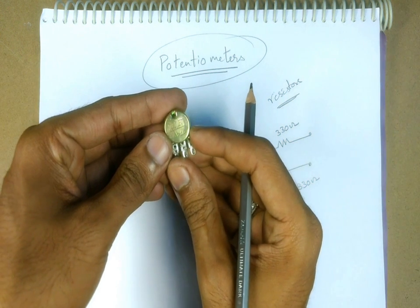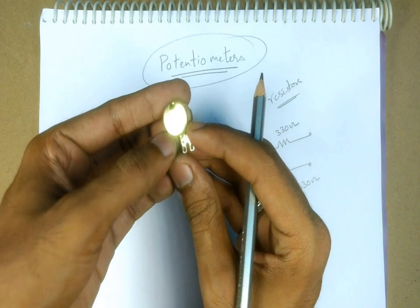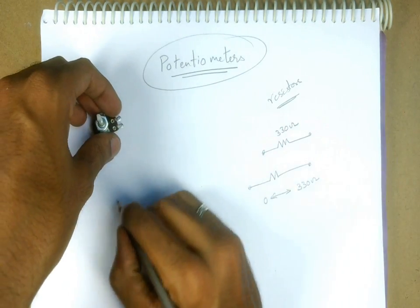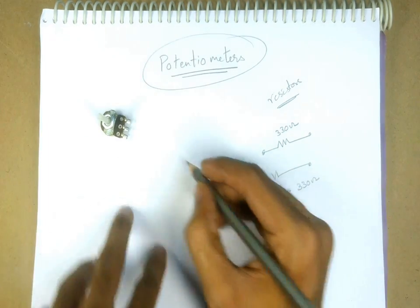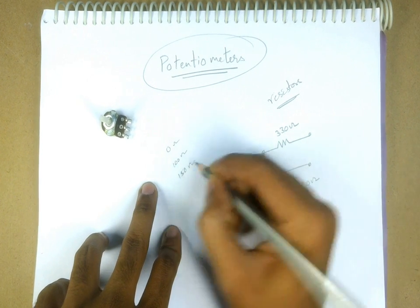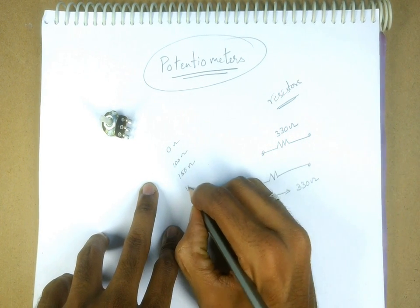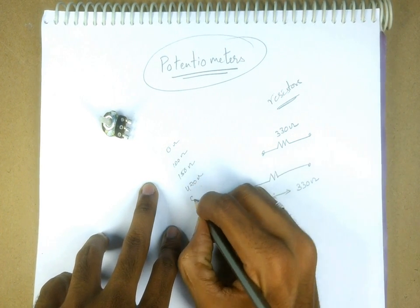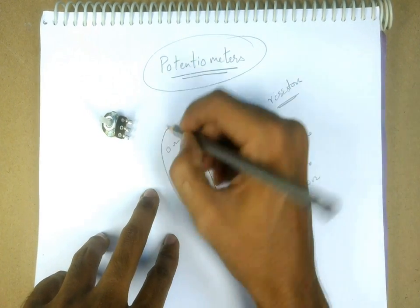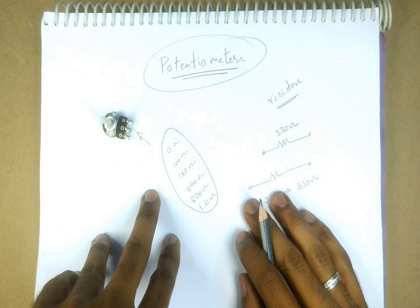Like this one. Using this 1 kilo ohm potentiometer, I can get any value which I want. For example, I need a resistance value of 100 ohms. I can get 150 ohms, 470 ohms, 800 ohms, or even the maximum value which is 1 kilo ohm. I can get any value using this potentiometer.